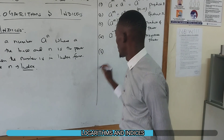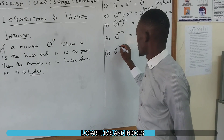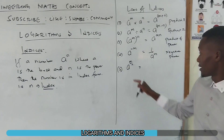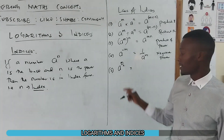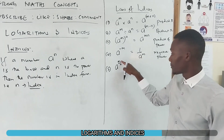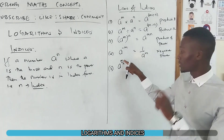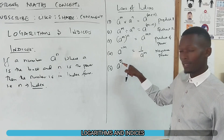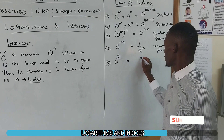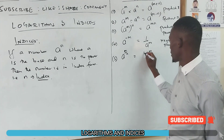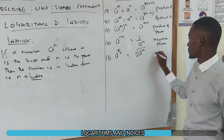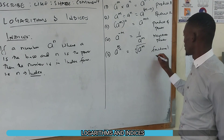Number five: if you have a raised to power m over n, the numerator m is always the power and the denominator n is the root. So you raise a to the power m, then find the nth root. This is called the fractional index.